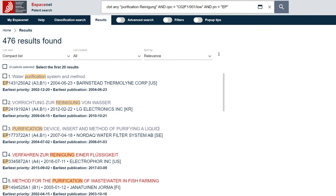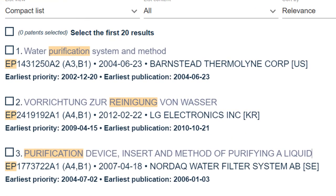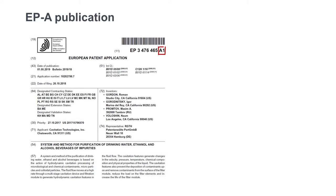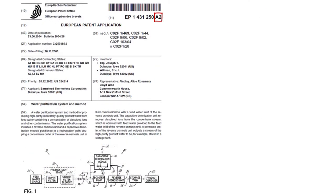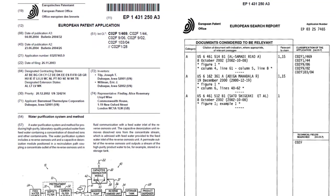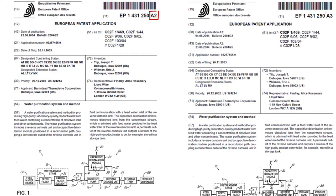For publications from the European Patent Office, you will frequently come across documents with kind codes A1 or A2, but also A3. A1 stands for a patent application published where the European search report is part of the published document. A2 is also a patent application but doesn't include the search report as it wasn't available at the time of publication. The latter will then be issued as a separate publication with kind code A3. So content-wise, A1 equals A2 plus A3.